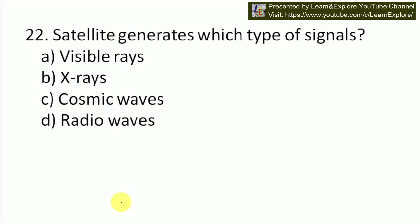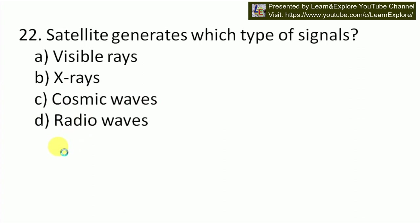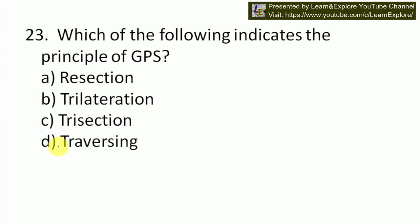Next question: a satellite generates which type of signals — visible rays, X-rays, cosmic waves, or radio waves? Our answer will be B — radio waves. Satellites generate radio wave type of signals. Next question: which of the following indicates the principle of GPS? Options are resection, trilateration, trisection, and traversing. Our answer will be B — trilateration indicates the principle of GPS.